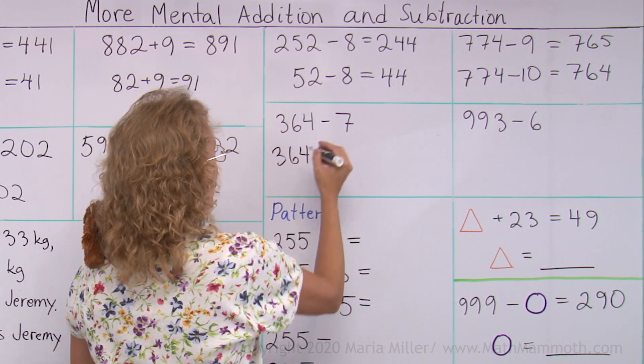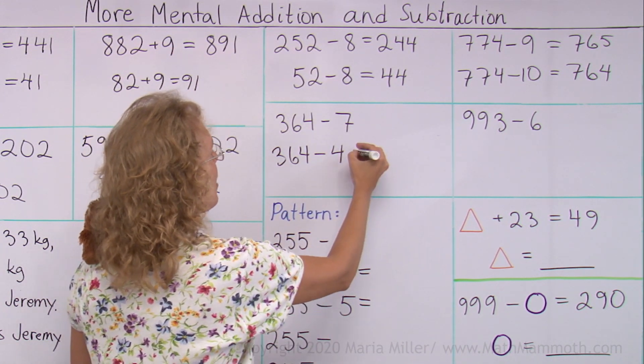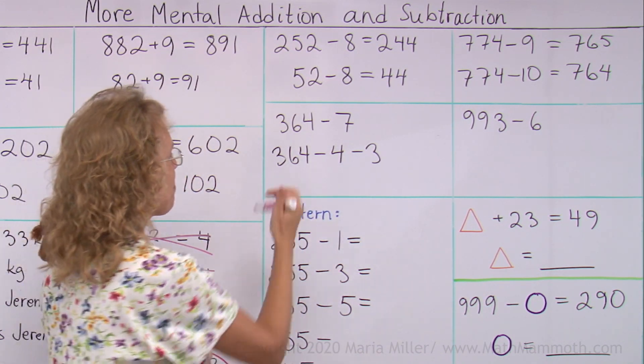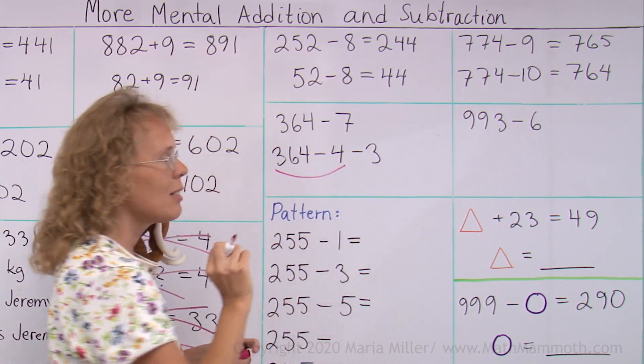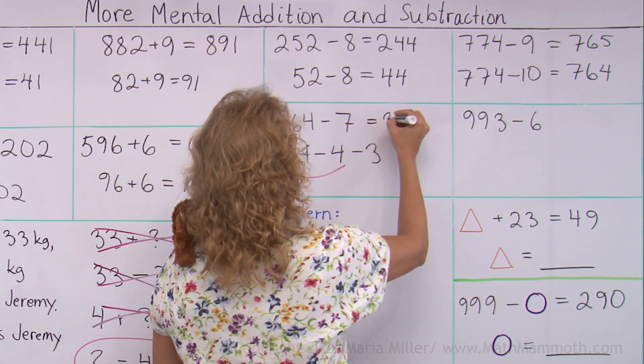364 minus 7. Another way would be to subtract in parts. 364 and subtract so that you will subtract down to the previous 10. And then 3 more. So this here is 360. And then 360 minus 3 is 357.